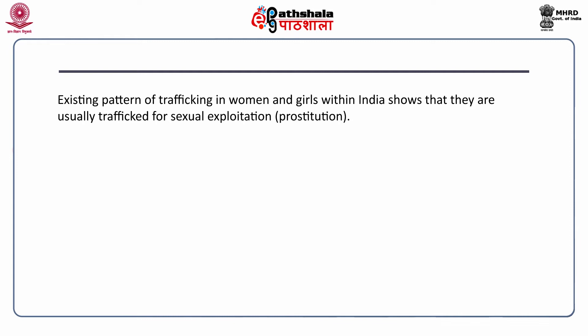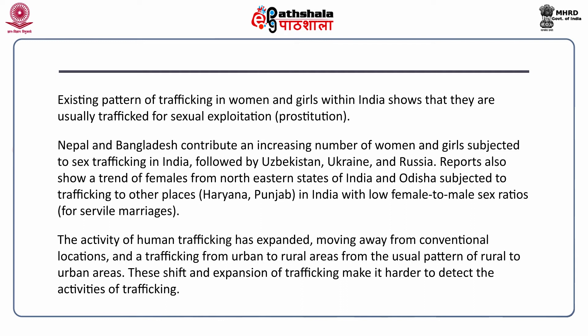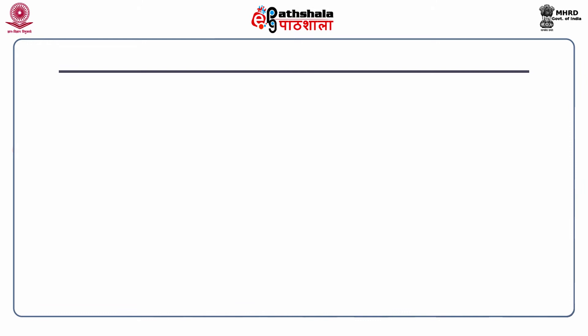Existing patterns of trafficking in women and girls within India show that they are usually trafficked for sexual exploitation. Nepal and Bangladesh contribute an increasing number of women and girls subjected to sex trafficking in India, followed by Ukraine and Russia. Reports also show a trend of females from northeastern states of India and Odisha being trafficked to Haryana and Punjab. These states have low female-to-male sex ratios. The activity of human trafficking has expanded, moving away from conventional urban-to-rural patterns, making it harder to detect.